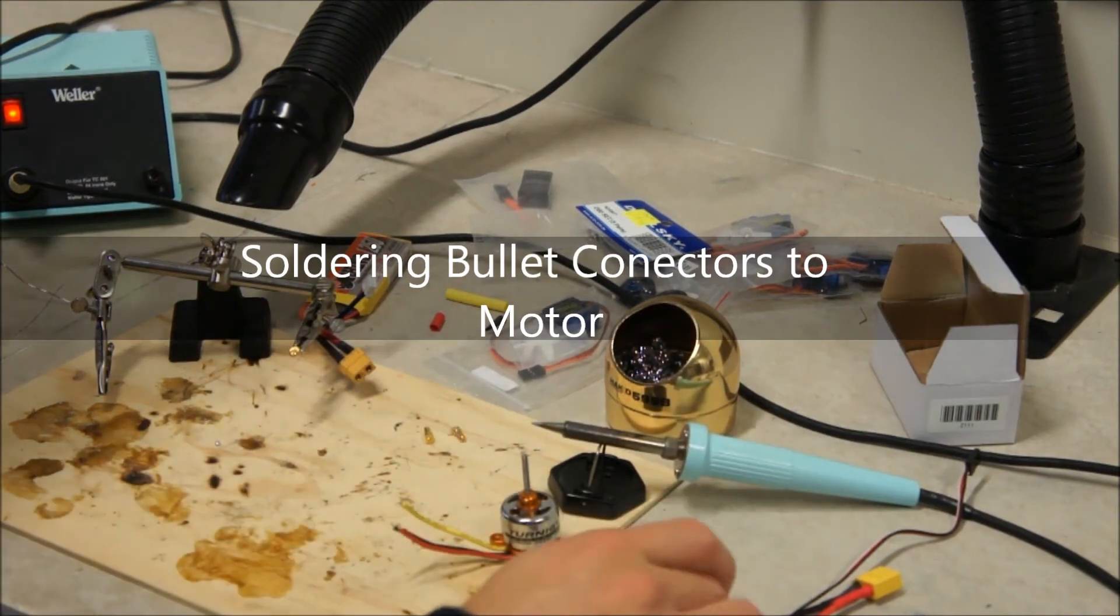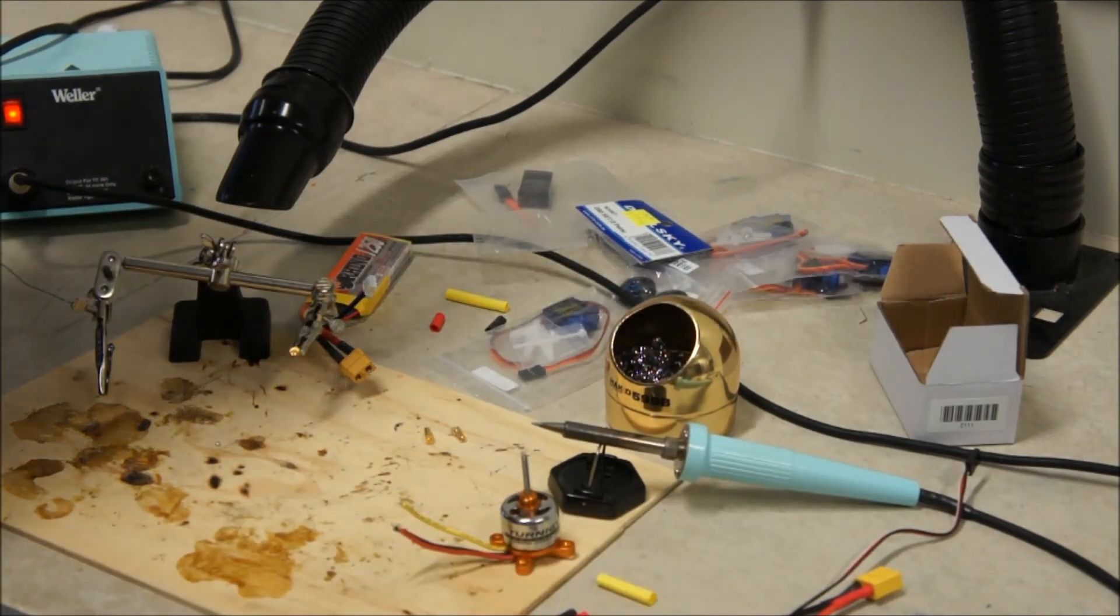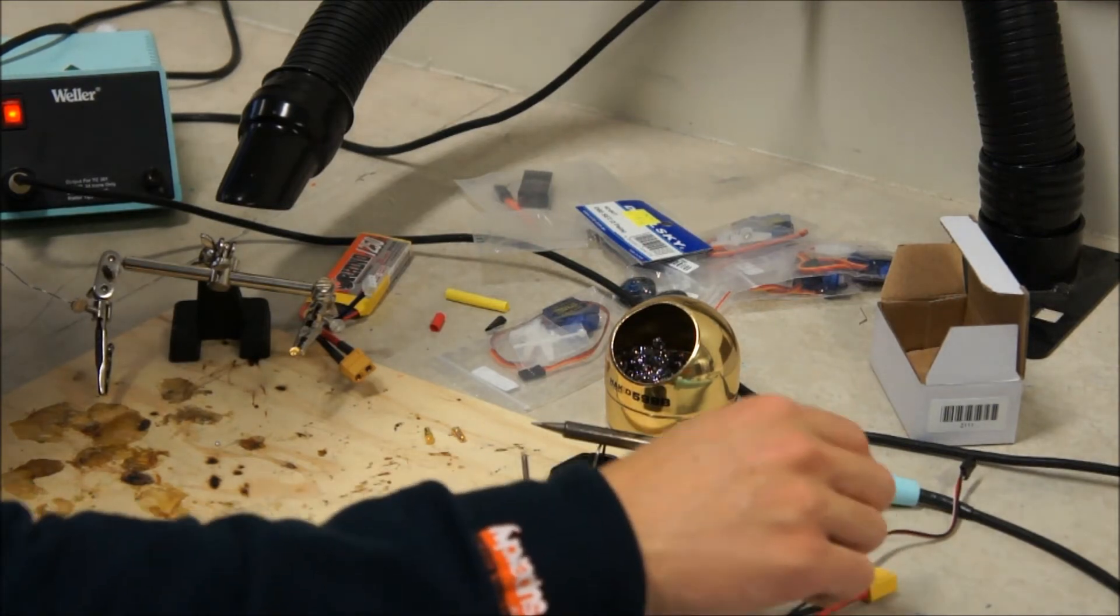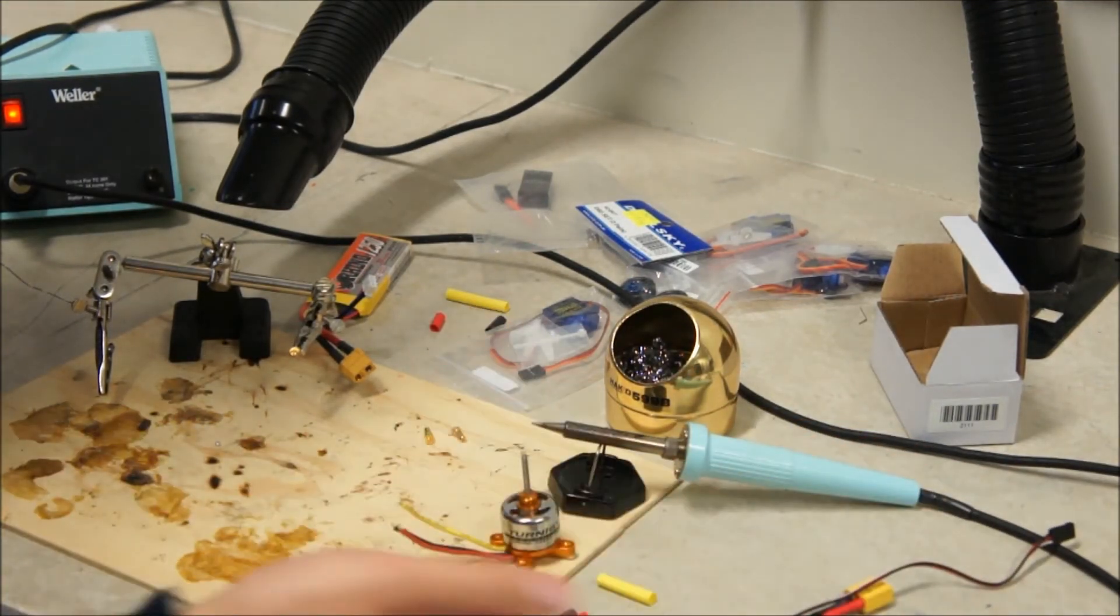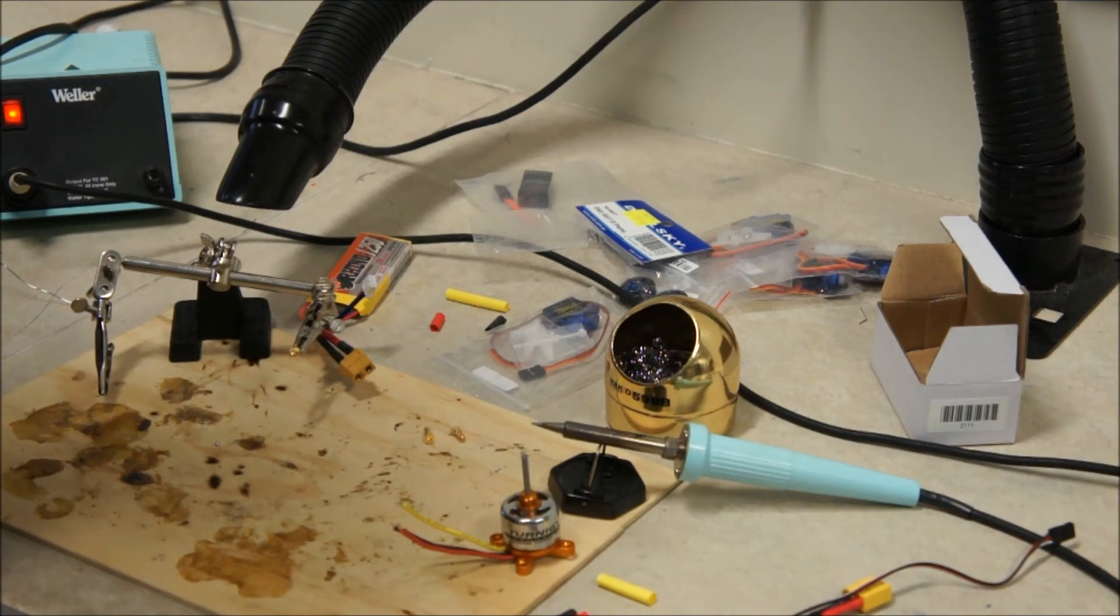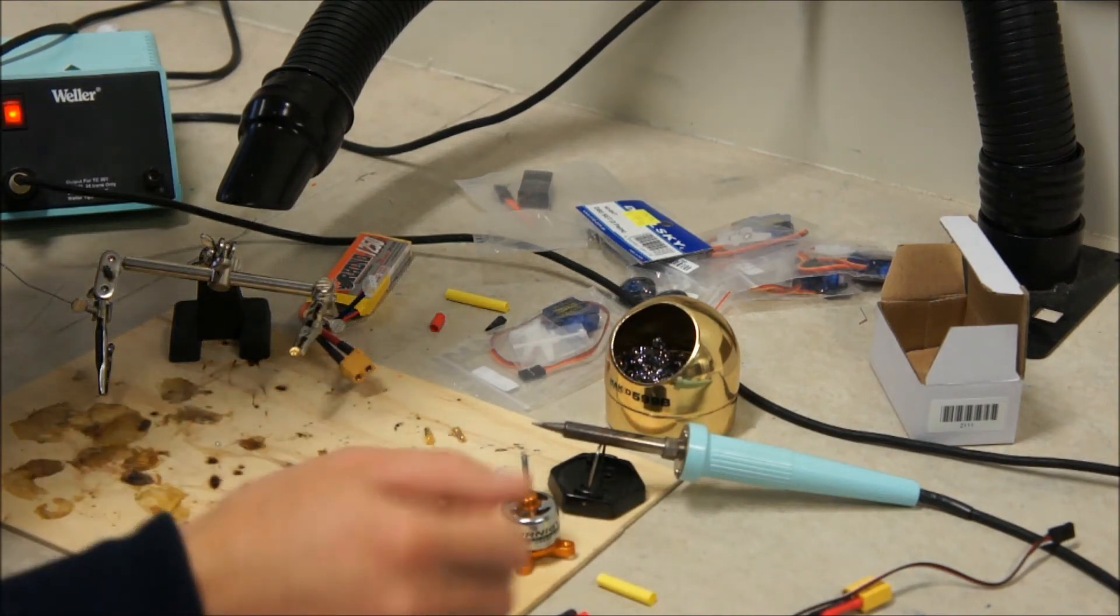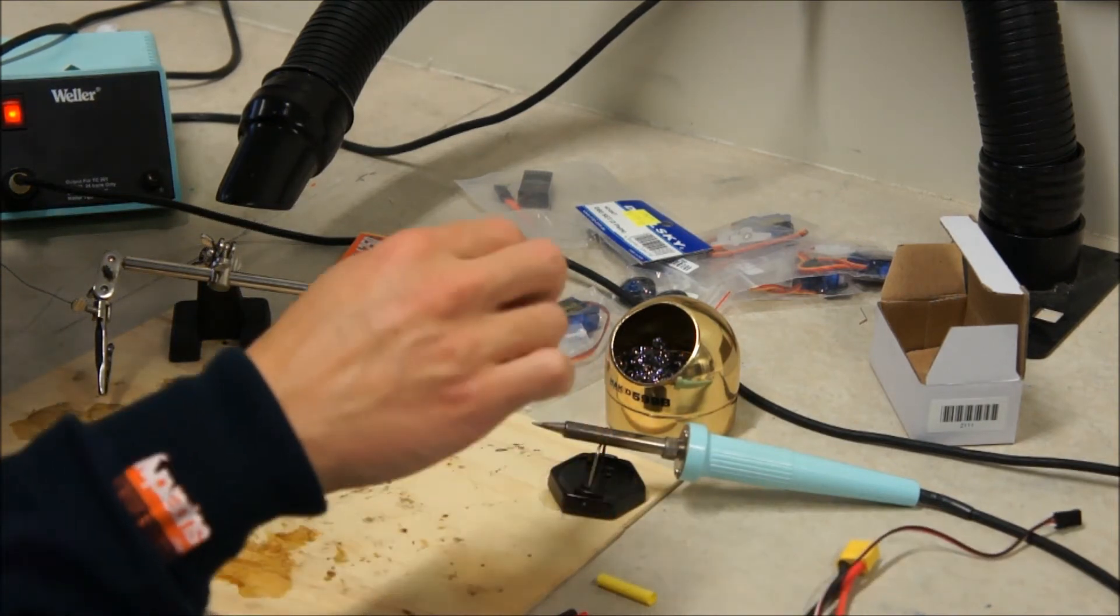Okay, so with my speed controller completed, red, black and yellow and my battery connector and terminal all attached and heat shrunk so that they're not going to short out against each other. That one's completed. Now I need to do the motor.